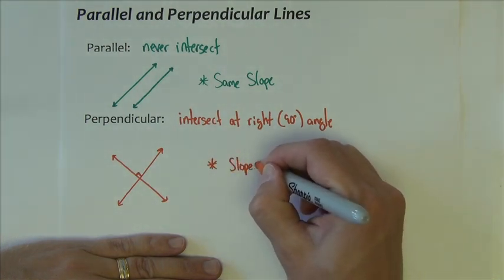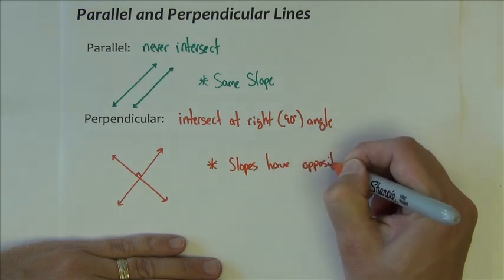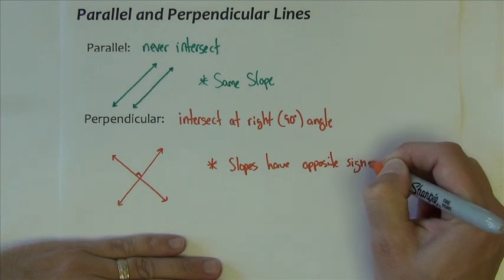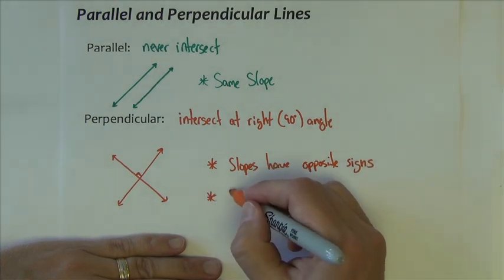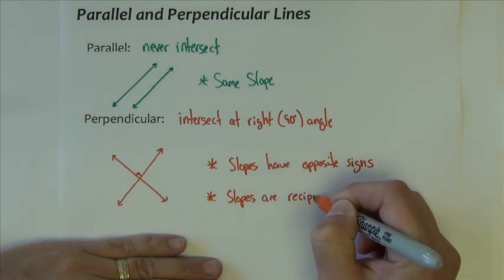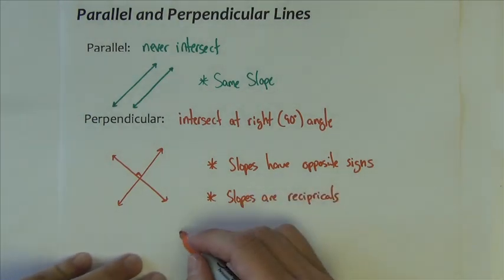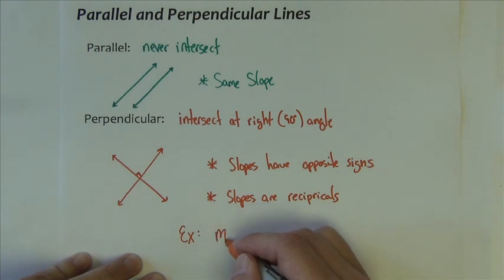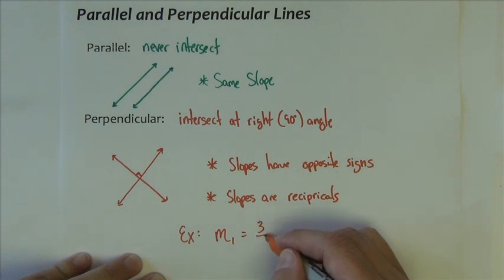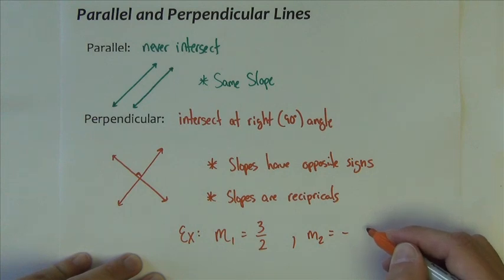We can say the slopes have opposite signs. That will always be true, and the slopes are reciprocals, opposites and reciprocals. Example would be if one slope, say the slope of line one is three halves, then the slope of line two would be negative, because this one's positive, and it would be two thirds.